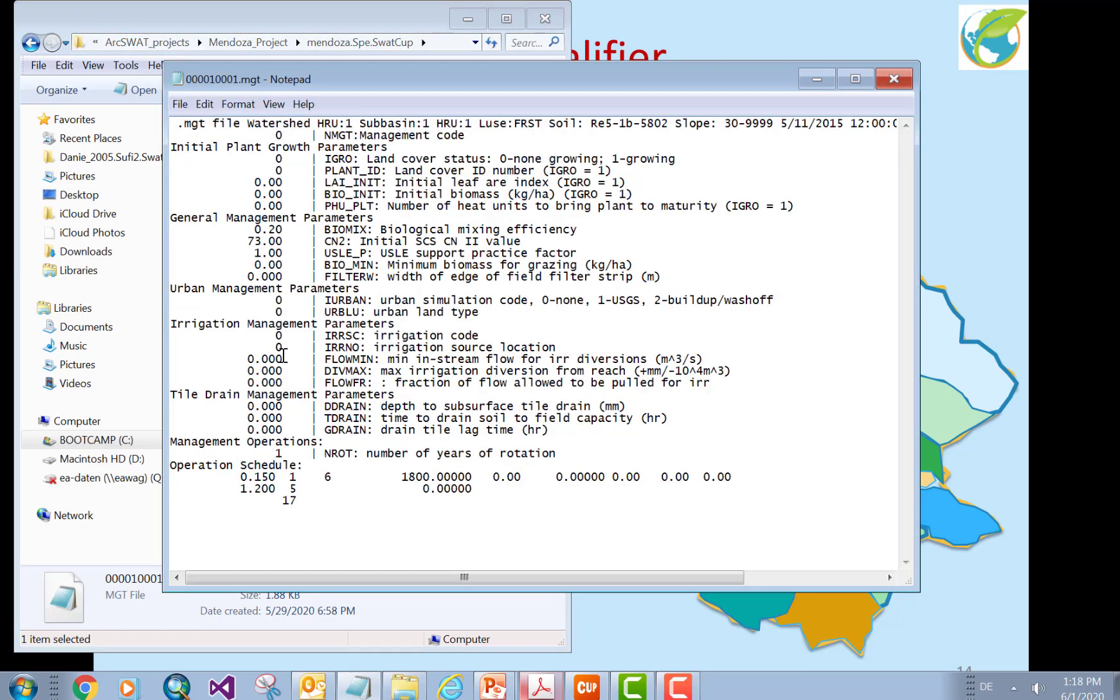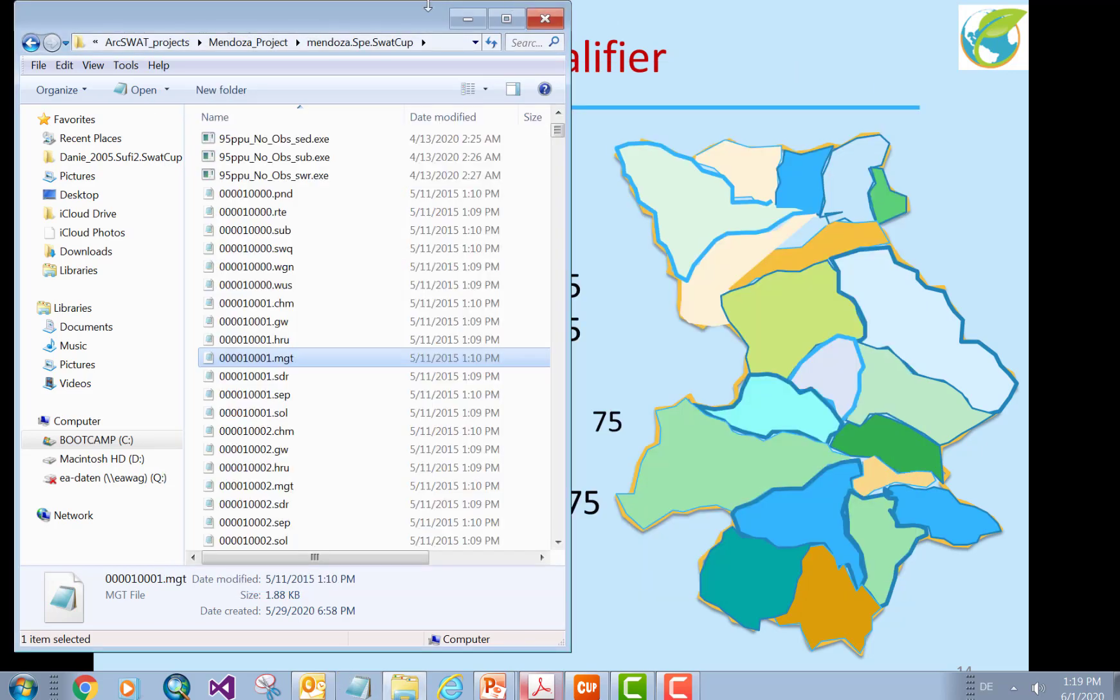The same with management. Management, you can go down to HRU level. So, you can specify soil, land use, slope, and all that. So, that's how you know what qualifiers you can use to specify your parameters.